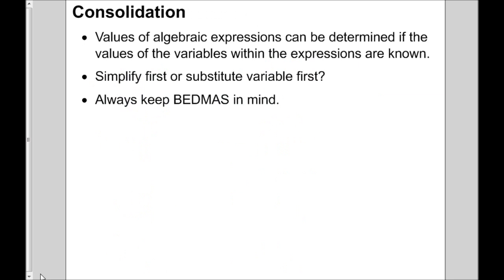To sum up: the values of algebraic expressions can be determined if the values of the variables are known. Simplify the expression first if you can, then substitute the variable. And always keep BEDMAS in mind — that's the number one source of errors in this topic. I hope this is clear. Best of luck.